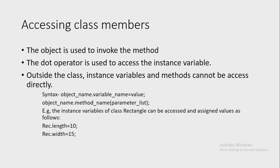Next, we look at how to access class members — how to access instance variables and instance methods. Objects contain data members and methods to operate on the data. Each object has its own memory space for data members. The object is used to invoke methods, and the dot operator is used to access a method from outside the class. It can be accessed directly within the class in which it is defined, but outside the class, instance variables and methods cannot be accessed directly.